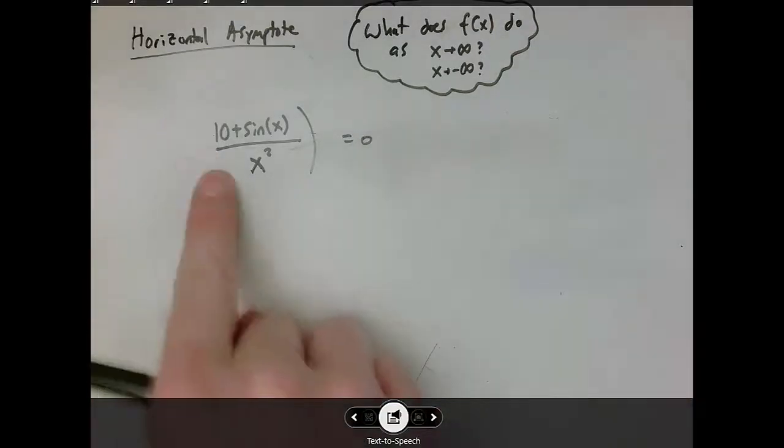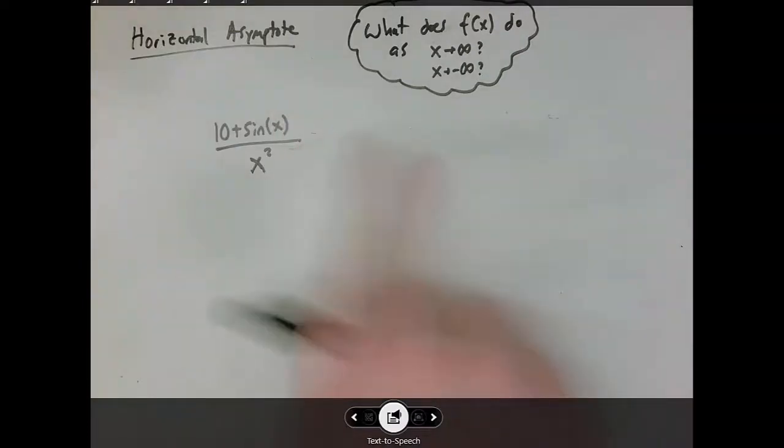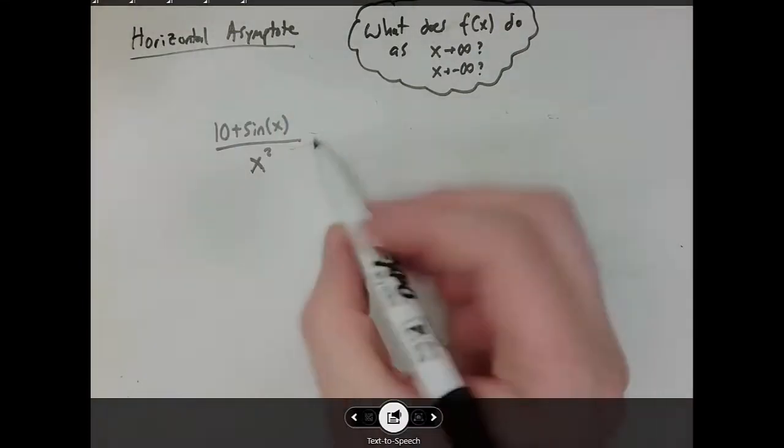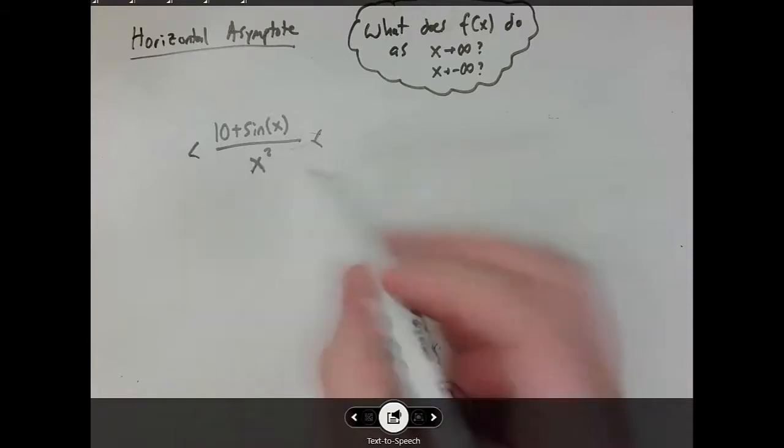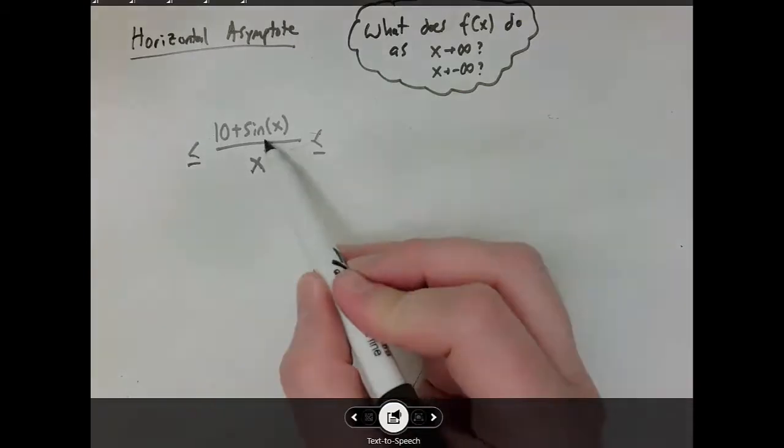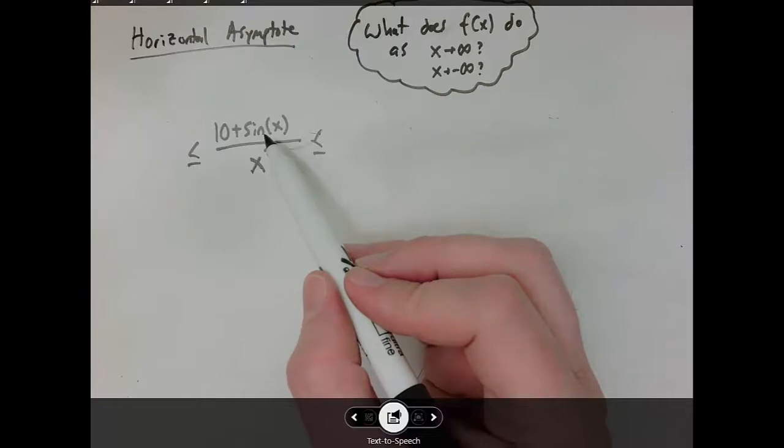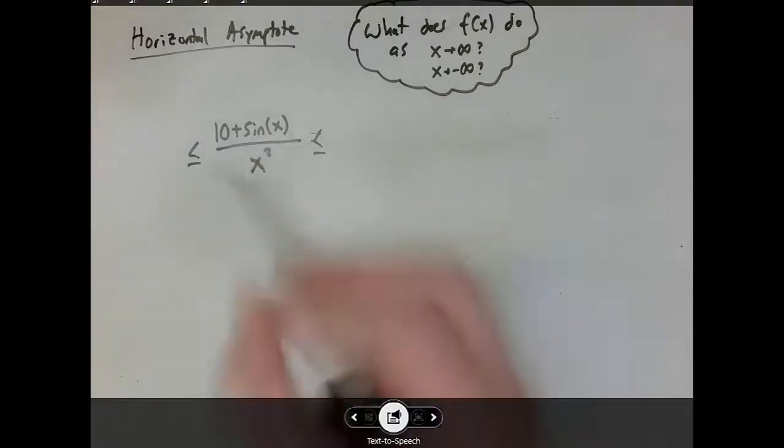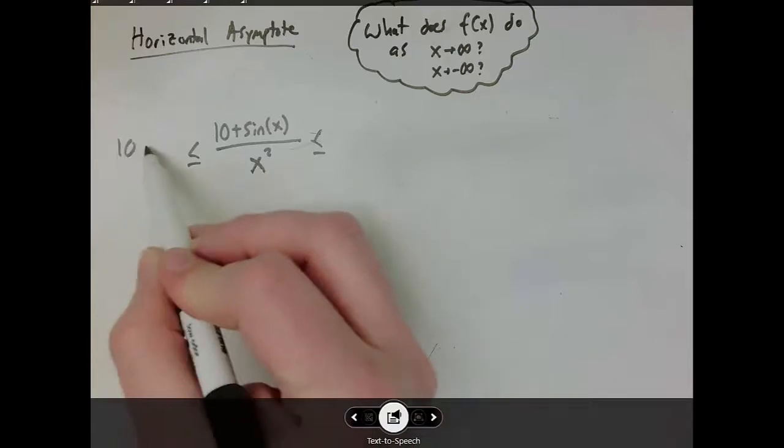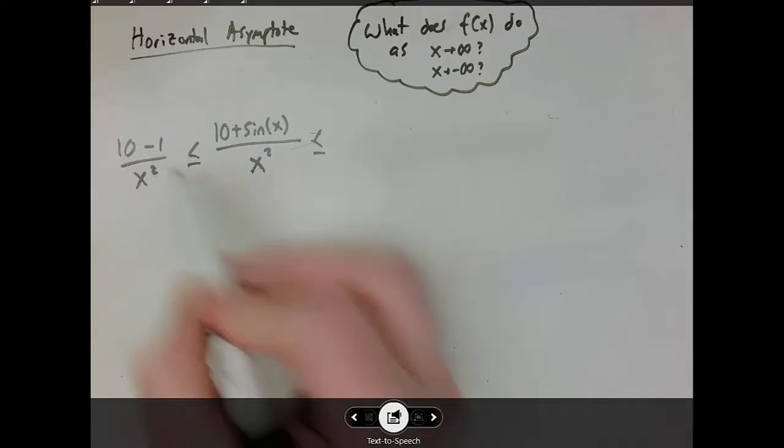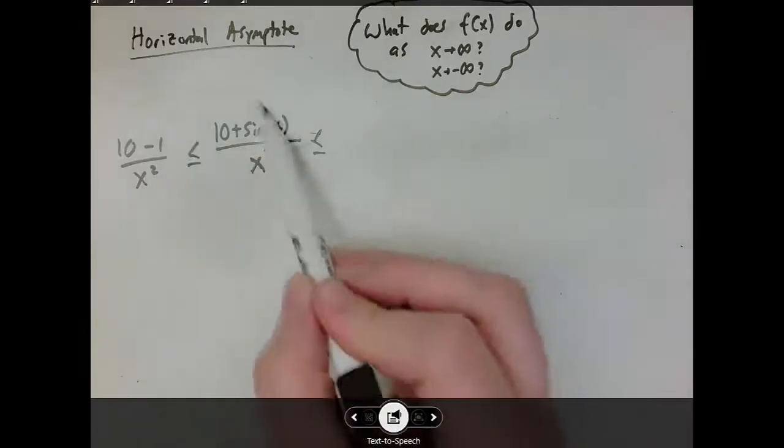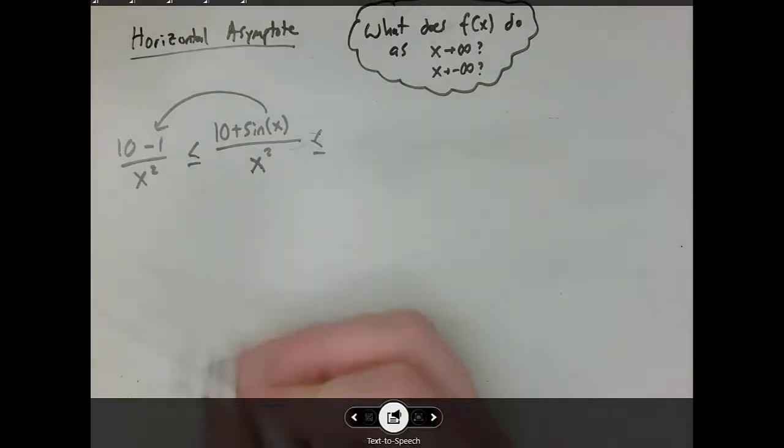In calculus, you'll learn some tools for making this argument a little bit more carefully. But let me make a quick observation here. So the smallest thing that sine can ever be is negative one. So we know that this expression is definitely bigger than or equal to 10 minus 1 over x squared, because all I've done is I've replaced sine with the smallest possible value that sine could ever be. So I know that no matter what x is, this is always bigger than or equal to that one.